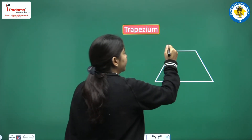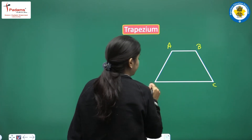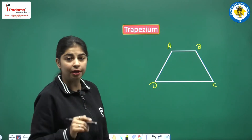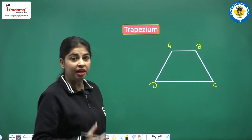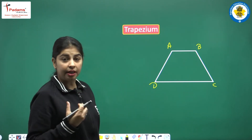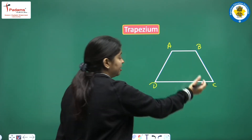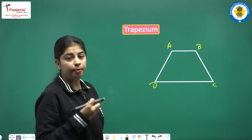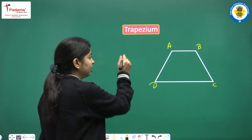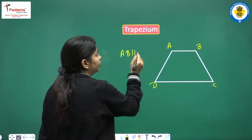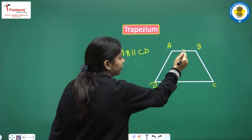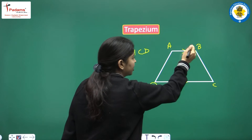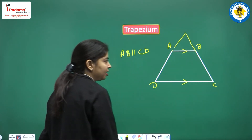The first quadrilateral we have is trapezium. Let's name it ABCD. What is the definition of trapezium? In a trapezium, only one pair of sides is parallel. It is a four-sided closed figure. In ABCD, AB is parallel to CD, but AD is not parallel to BC — if we extend those sides, they will meet.